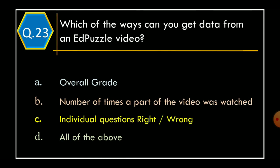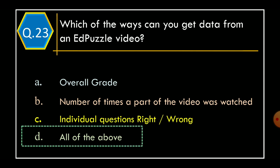Question 23: Which of the following ways can you get data from an EdPuzzle video? Option A: Overall grade. Option B: Number of times a part of the video is watched. Option C: Individual questions right or wrong. Option D: All of the above. And the correct option is Option D: All of the above.